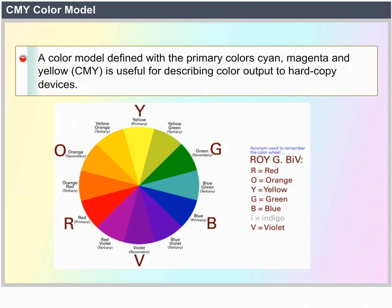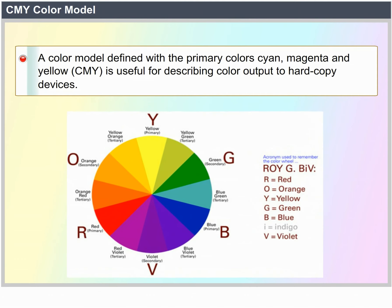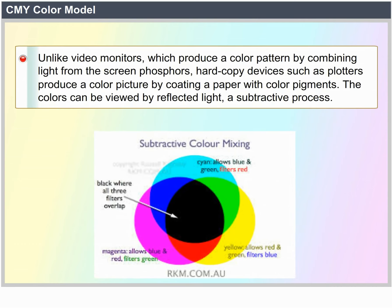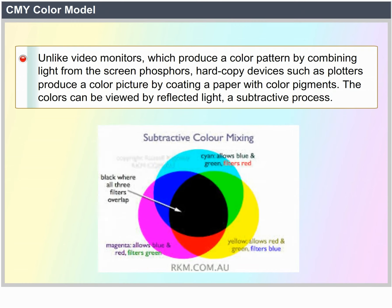The CMY color model is defined with the primary colors cyan, magenta, and yellow. CMY is useful for describing color output to hard copy devices. Unlike video monitors, which produce a color pattern by combining light from screen phosphors, hard copy devices such as plotters produce a color picture by coating paper with color pigments. We see the colors by reflected light — a subtractive process.